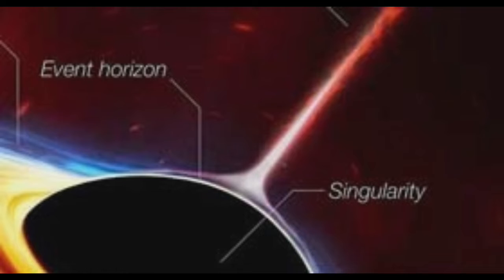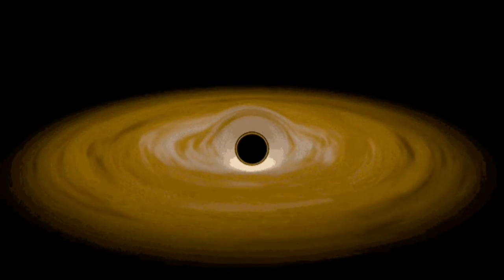A black hole has two parts: event horizon and the hole. Event horizon is the last possible distance anything can move up to and return back.